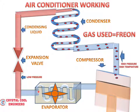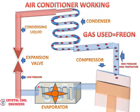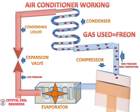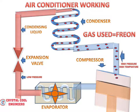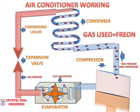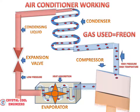The cooled, low-pressure liquid will go to the space where we want to produce cooling. In this section, it will absorb heat from the space we want to cool, and it will convert back into vapor by taking that heat, then return to the compressor.